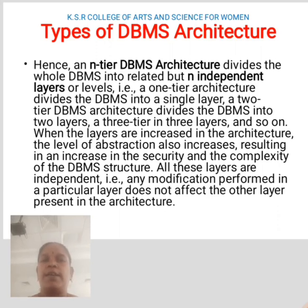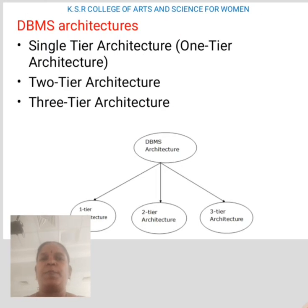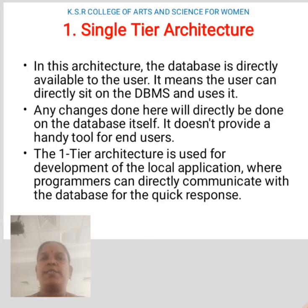All these layers are independent. That is, any modification performed in a particular layer does not affect the other layers present in the architecture. DBMS architecture consists of three types: single-tier architecture, two-tier architecture, and three-tier architecture.